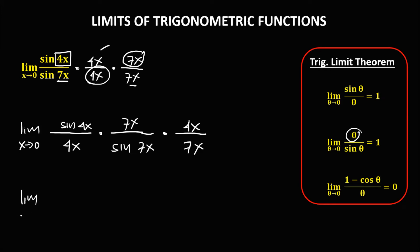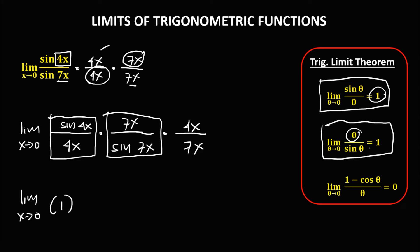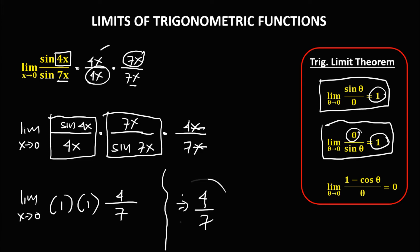Using the trigonometric limit theorem, sine 4x over 4x matches sine θ over θ, equal to 1. And 7x over sine 7x matches θ over sine θ, also equal to 1. Then times 4x over 7x — cancel the x — giving 4 over 7. Since there are no more variables, the limit is equal to 4 over 7.